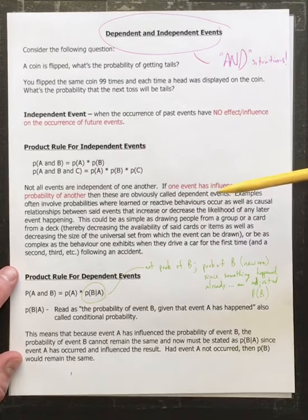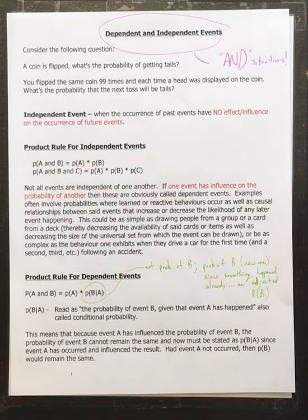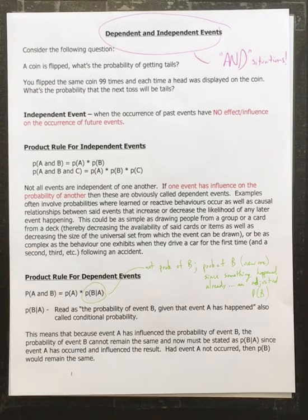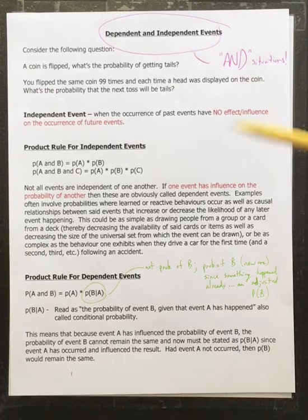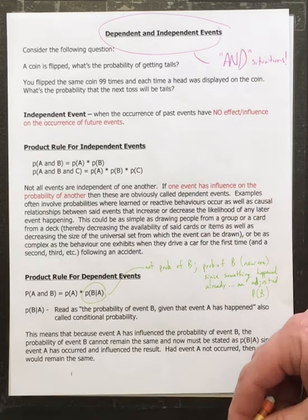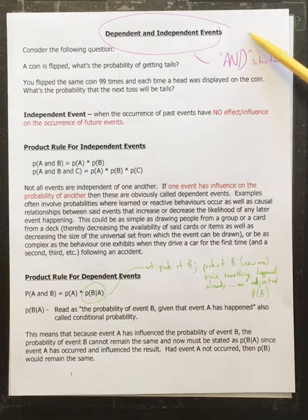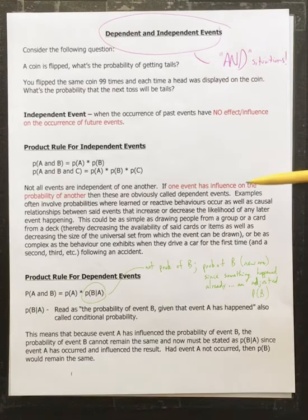The product rule — this whole section is all about multiple events, so it's about 'and.' First event and second event and third event, viewed as a whole. This is like flipping three coins and looking at the probability of three heads — it's an 'and' scenario. The 'or' scenario we'll worry about tomorrow. Today we focus on the 'and.'